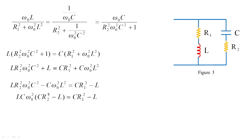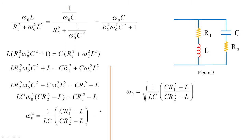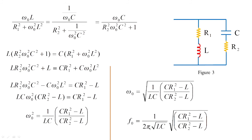Taking the remaining terms to the denominator, ω₀² = (1/LC) × (CR1² − L)/(CR2² − L), so ω₀ = √[(1/LC) × (CR1² − L)/(CR2² − L)]. The resonant frequency is therefore f₀ = 1/(2π) × √[(1/LC) × (CR1² − L)/(CR2² − L)]. This is how we estimate the resonant frequency for any series or parallel combination.